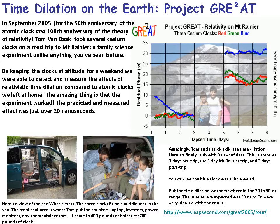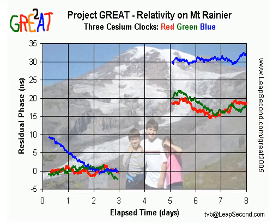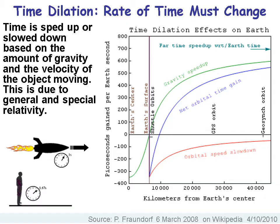It's a pretty good little science experiment with the kids. One clock was a little off — that's the nature of science, nothing's ever exactly right. Time dilation says that the rate of time must change: time is sped up or slowed down based on the amount of gravity or velocity of the moving objects, due to what Einstein called general or special relativity.